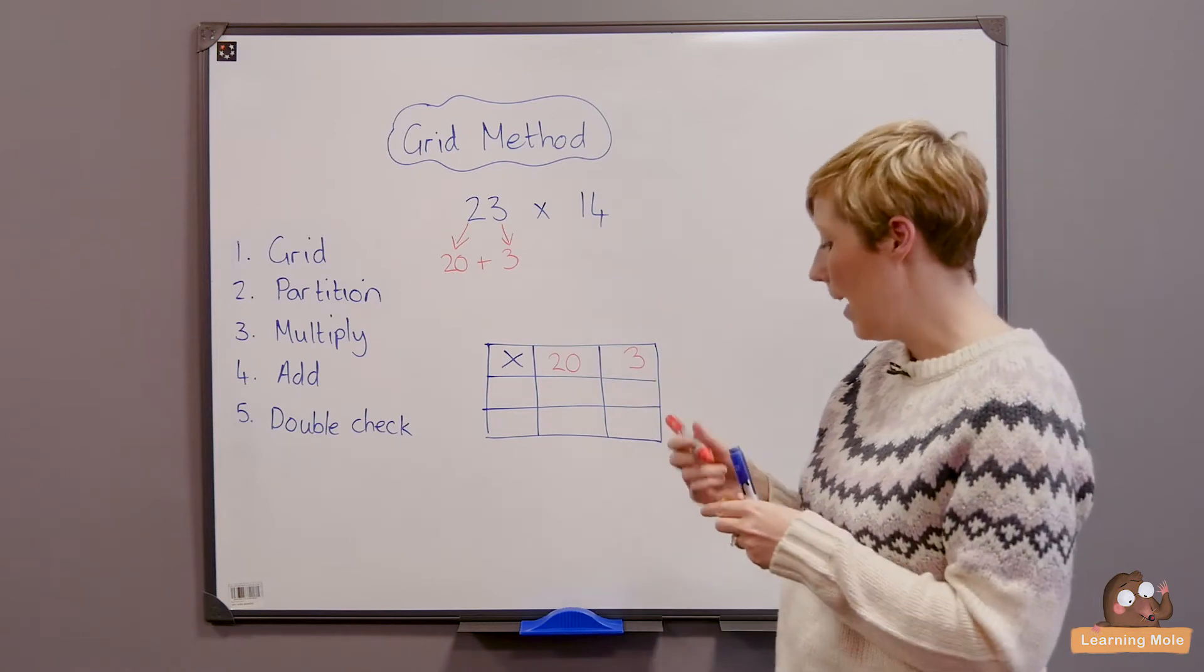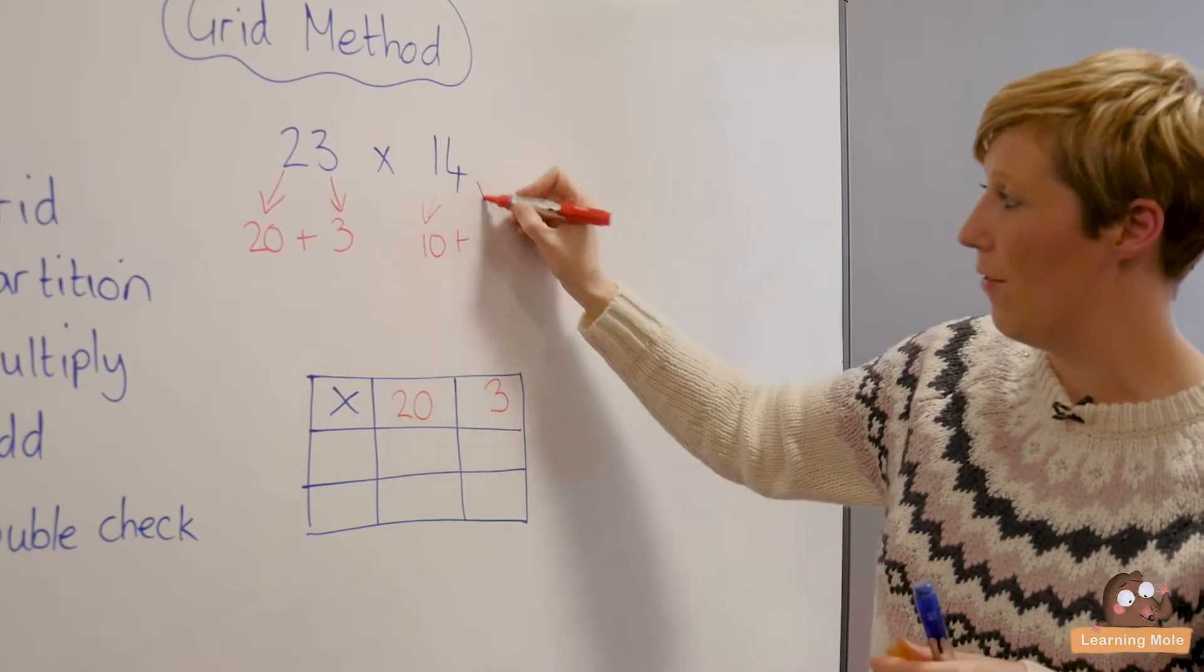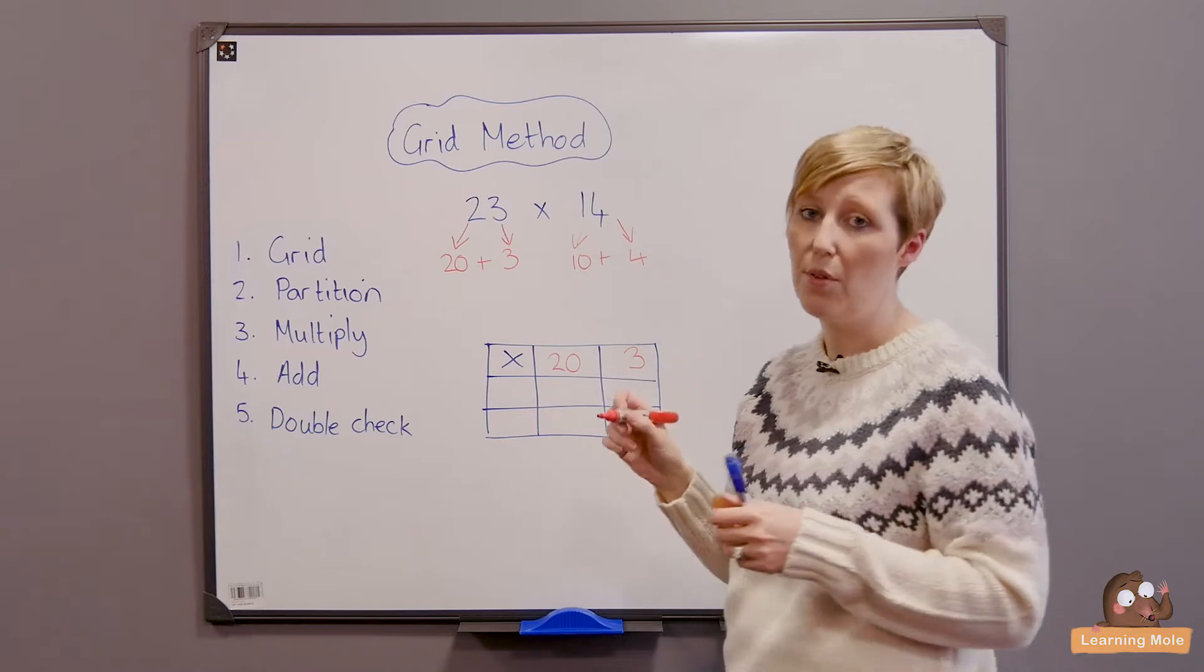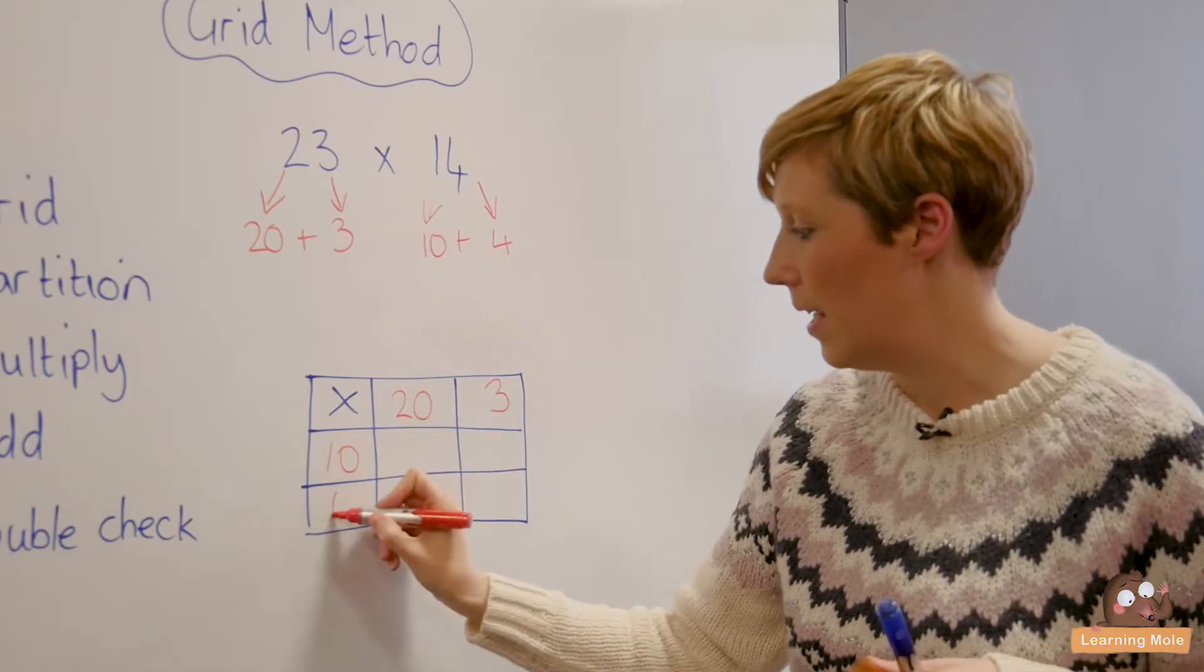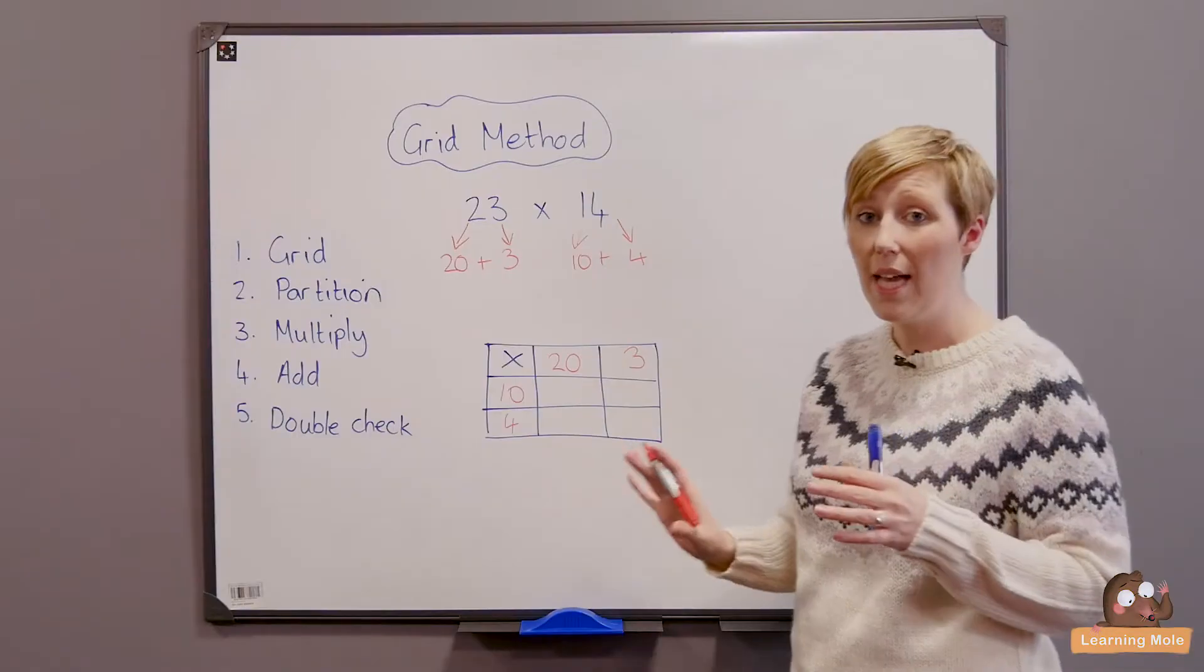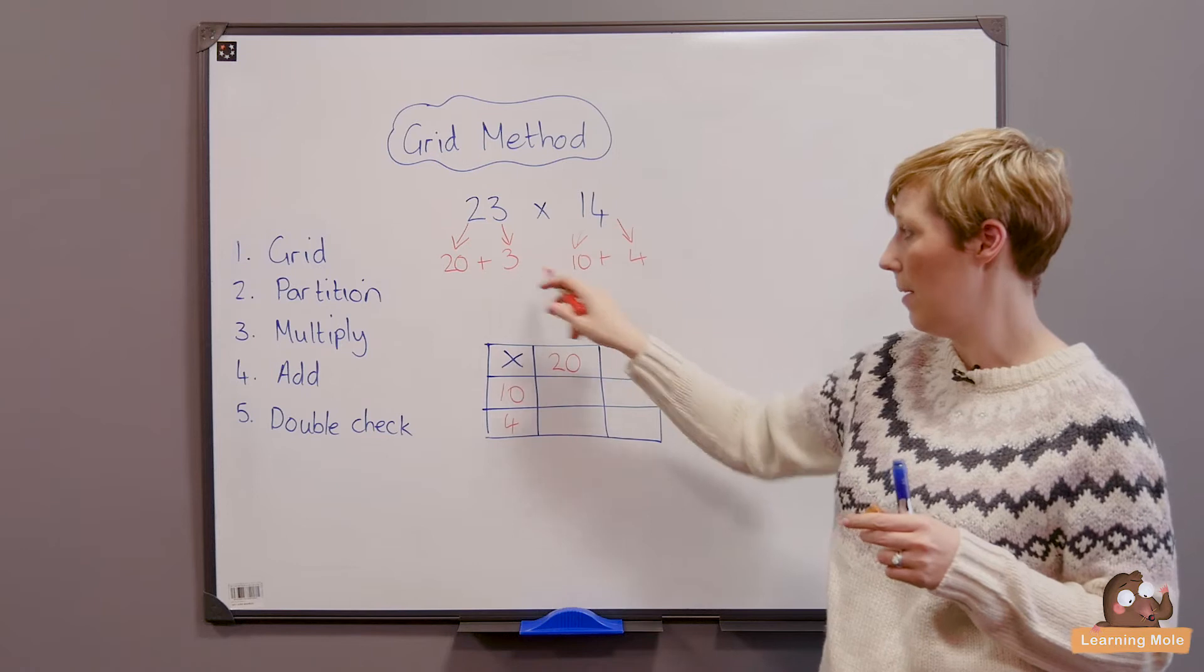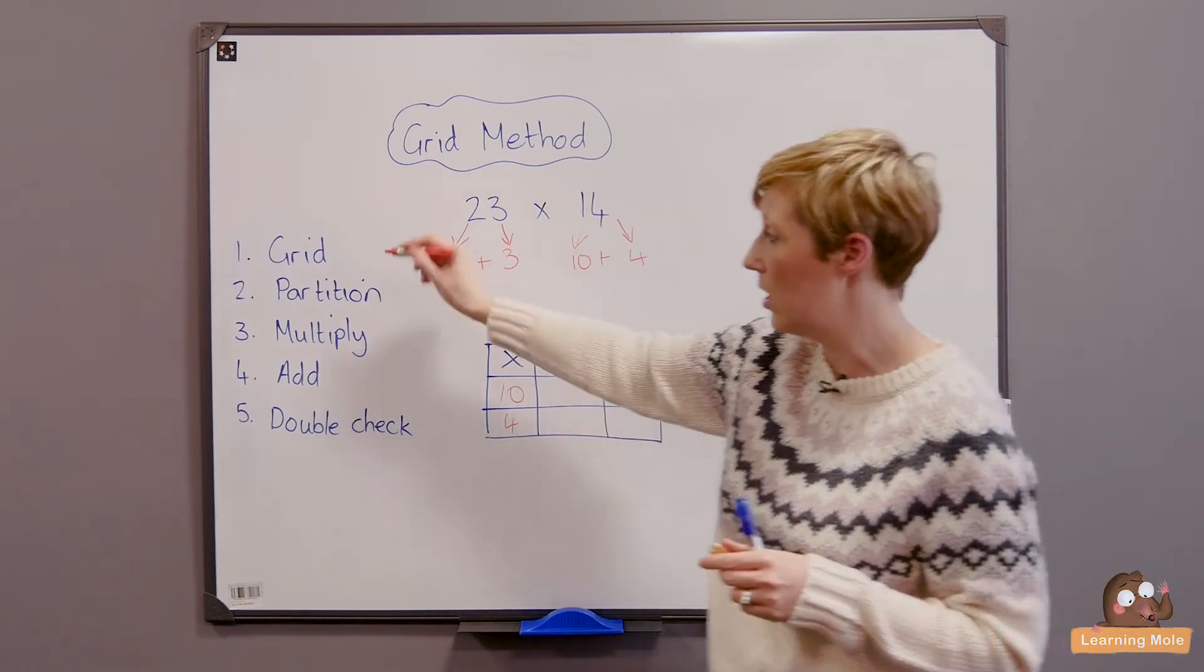Then I'm going to move to partition my other number, which is 1 ten, which is 10, plus 4. I'm going to check: 10 plus 4, yes, it's 14, so I've partitioned correctly. I'm going to drop that in here. So I've now set up my grid. I've done my 23—my 20 and my 3—and my 14—my 10 and my 4—and I've put it into my grid. Check: I've drawn my grid, check; I've partitioned.